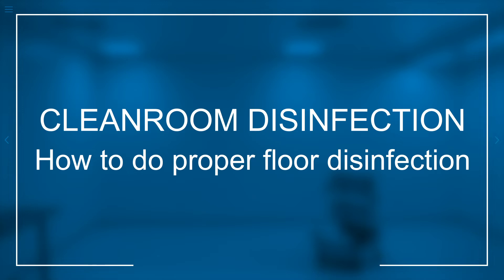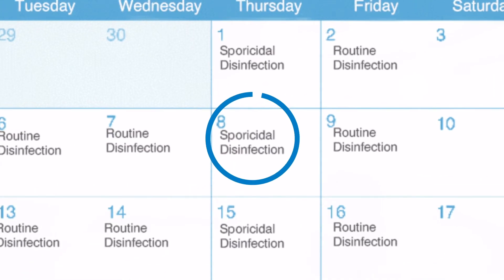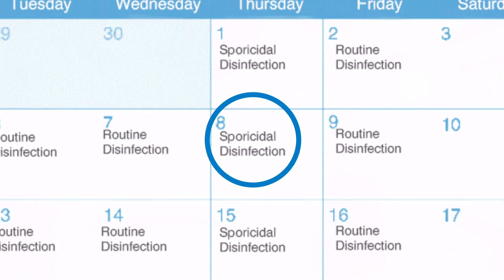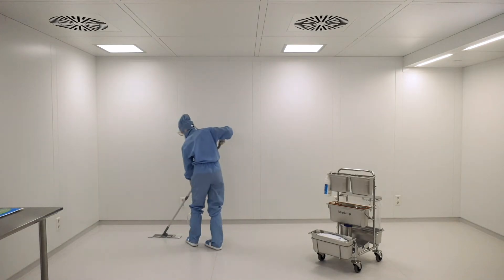Clean room disinfection is an important part of strategic contamination control. We recommend daily disinfection with a routine disinfectant that covers the basic effectiveness. In addition, we recommend a sporocidal disinfectant once a week. The final timing of decontamination measures should be determined with the help of an internal risk assessment.